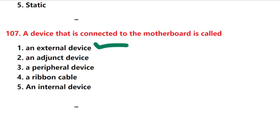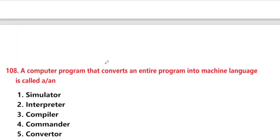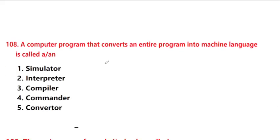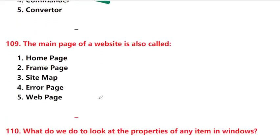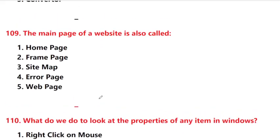A computer program that converts an entire program into machine language is called — answer is option 3: compiler.